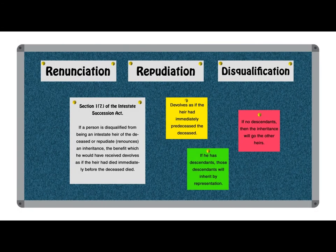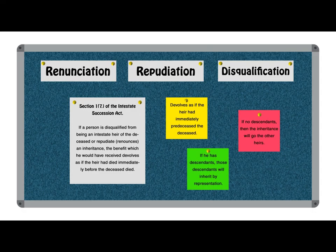Now that we have looked at the scenarios which deal with the rules governing intestate succession, it is necessary to also consider briefly renunciation, repudiation and disqualification. In some instances, an heir may choose to renounce or repudiate a benefit. In other instances, an heir may be disqualified from inheriting. In terms of section 17 of the Intestate Succession Act, if a person is disqualified from being an intestate heir or repudiates or renounces an inheritance, that benefit that he or she would have received will devolve as if he or she had died before the deceased. If the disqualified or repudiating heir has descendants, those descendants will inherit through representation. If not, their share will go to other heirs of the deceased according to the normal principles of intestate succession.